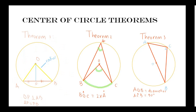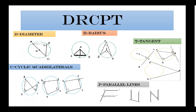C is for cyclic quadrilaterals — if you've got a cyclic quadrilateral in your diagram, think of the three theorems: angles in the same segment are equal, opposite angles of a cyclic quadrilateral are supplementary, and the exterior angle of a cyclic quadrilateral equals the interior opposite angle. T is for tangents — if you're given a tangent, think of the radius-tangent theorem, the tangent from external point theorem, and the tan-chord theorem.